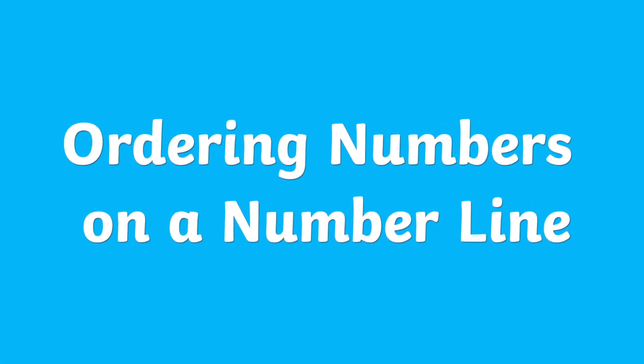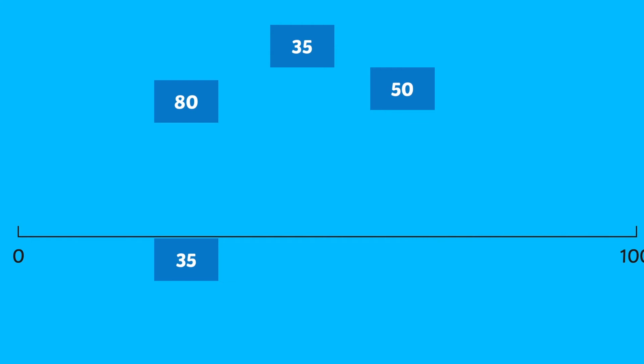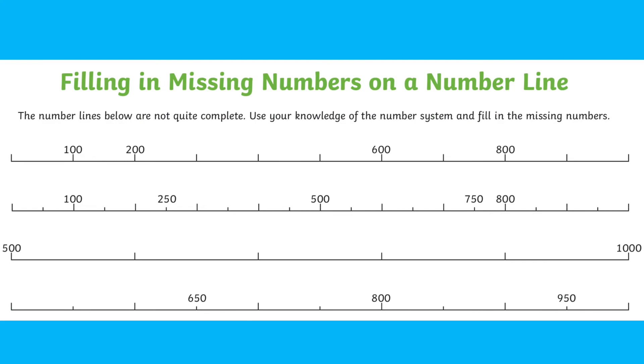Number lines can support children when learning to order numbers, for example 2-digit numbers from smallest to largest, or even placing missing numbers on a number line to fill in the gaps.